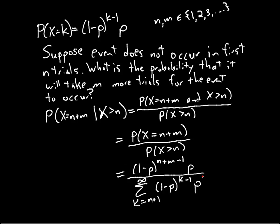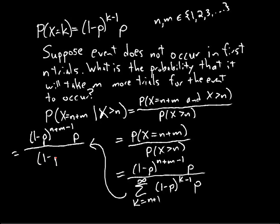So now we have (1-p)^(n+m-1) times p over (1-p)^n. The powers of n cancel, giving us (1-p)^(m-1) times p. Notice this is exactly what we get when we plug m into the formula for the geometric distribution — this is just the probability that x equals m.